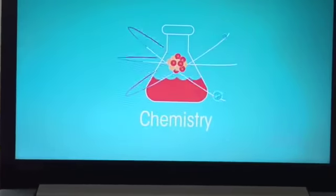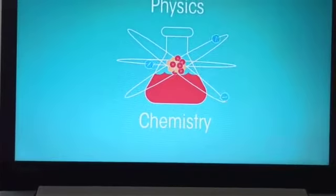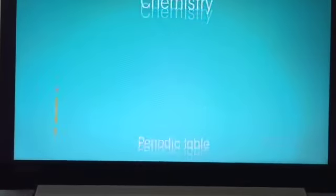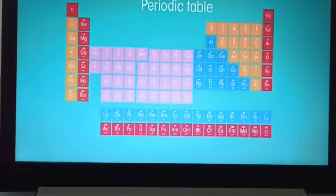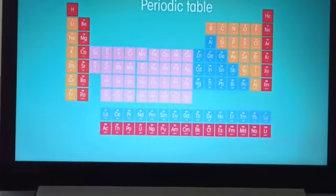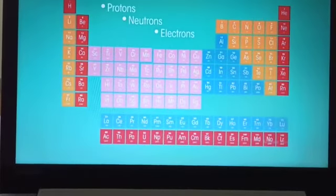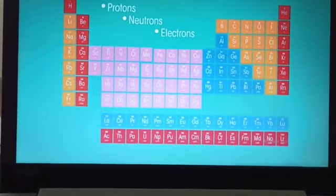And we have also studied this in the previous chapter of chemistry and physics also. We studied about the structure of an atom, that is the periodic table which tells about the difference between the different elements and different atoms having different protons, neutrons and electrons.